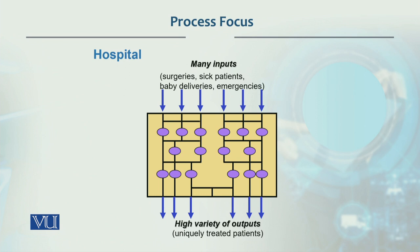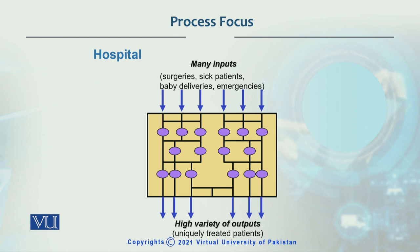They go through different routing via different places. For example, if an accident patient comes in, they first go to the doctor — emergency room — the doctor checks them, may send them for an X-ray, then back from X-ray for a blood test, then move again, and after reviewing, decide what further treatment is needed and admit them. So this is different routing — different patients go through different paths — and at the end there is a high variety of outputs. In this case, the hospital's uniquely treated patients receive customized treatment and then come out of this system.